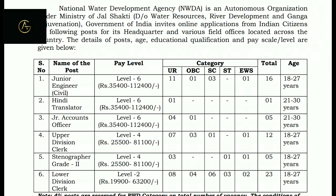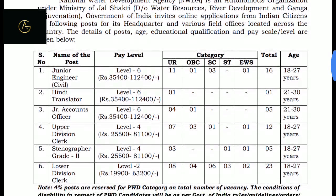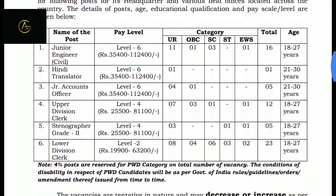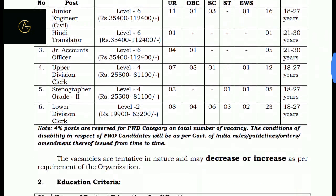Upper Division Clerk, level 4 pay scale, 25,500, total vacancies 12, age limit 18 to 27 years. Next, Stenographer level 4 pay, total five posts available, age limit 18 to 27 years. Lower Division Clerk, level 2, 19,900 pay, total vacancies, age limit 18 to 27 years.